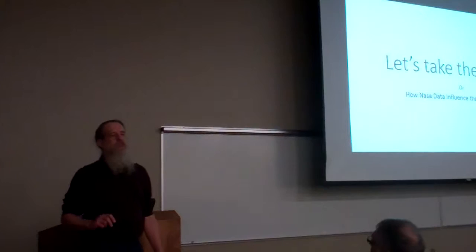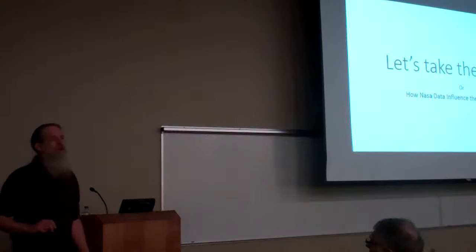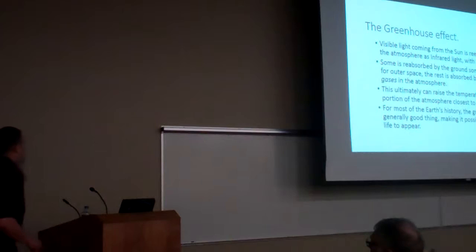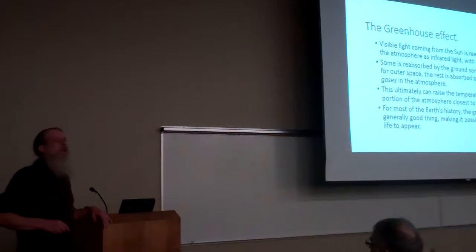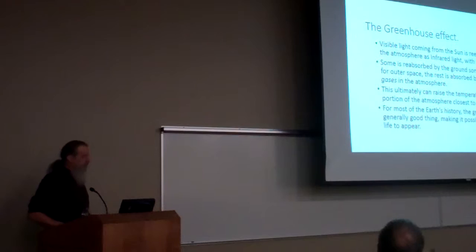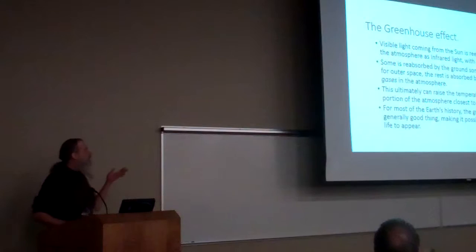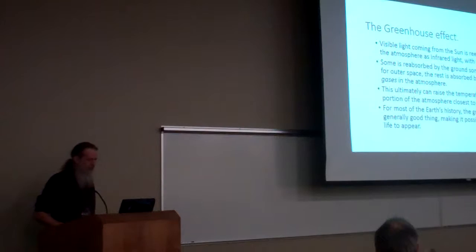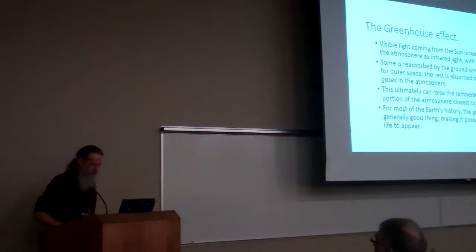One comment: it's not just NASA — JAXA and ESA are also putting a lot of satellites up there. Let's begin by talking about climate. Our starting point is the greenhouse effect. The basic effect works like this: visible light comes in from the sun, hits the ground, and is absorbed and re-emitted as infrared light, which has a longer wavelength than visible light.